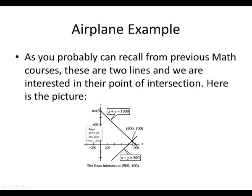So in this particular case, we see that there is an intersection right here at the point 900, 100. That simply means that the speed or the ground speed of the plane is 900 kilometers per hour, and the speed of the wind is 100 kilometers per hour.